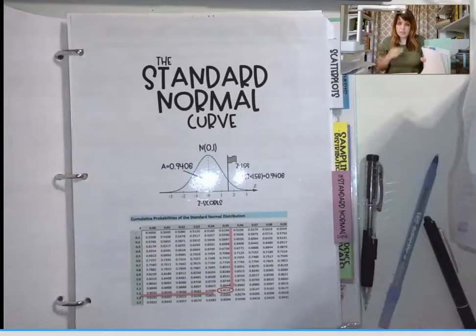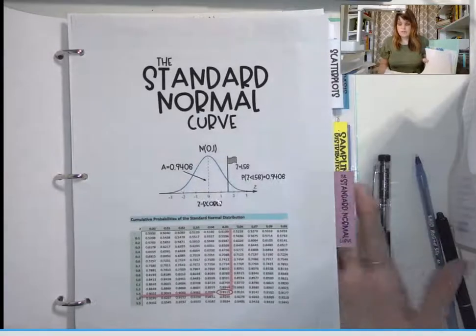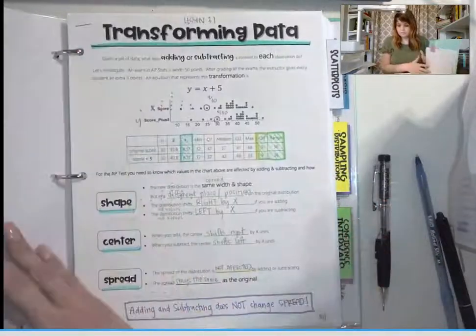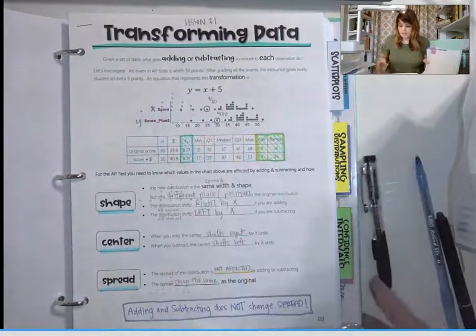These are the page numbers and lessons for Unit 3. This is on the standard normal curve. Lesson 31 is transforming data.